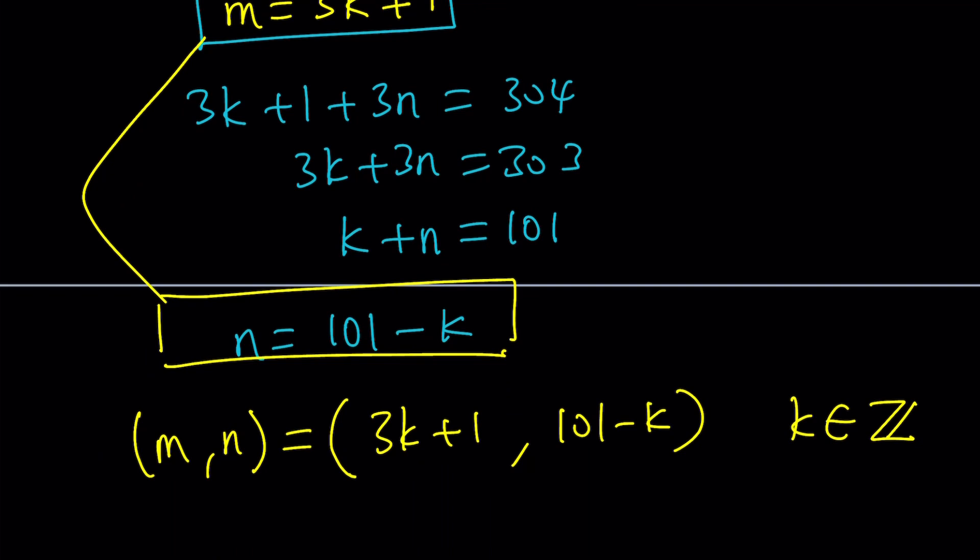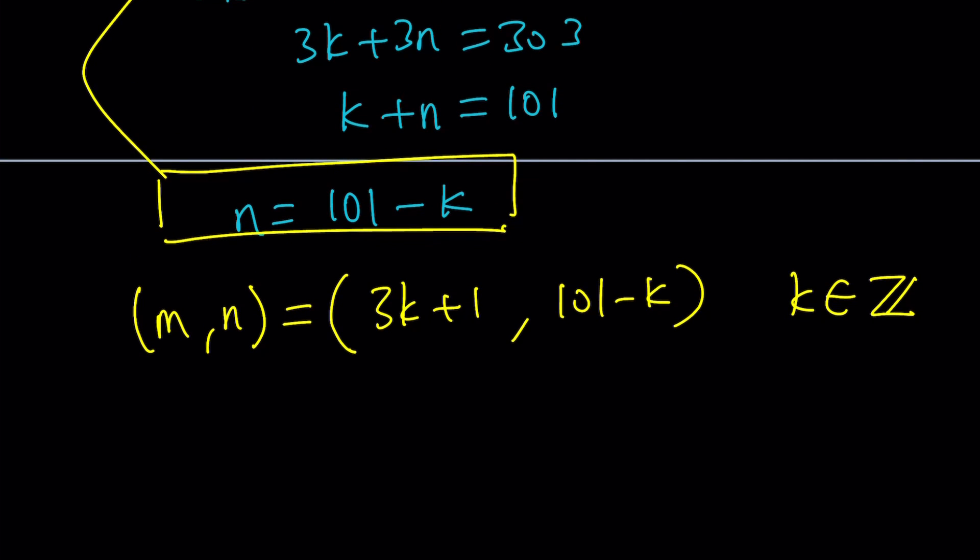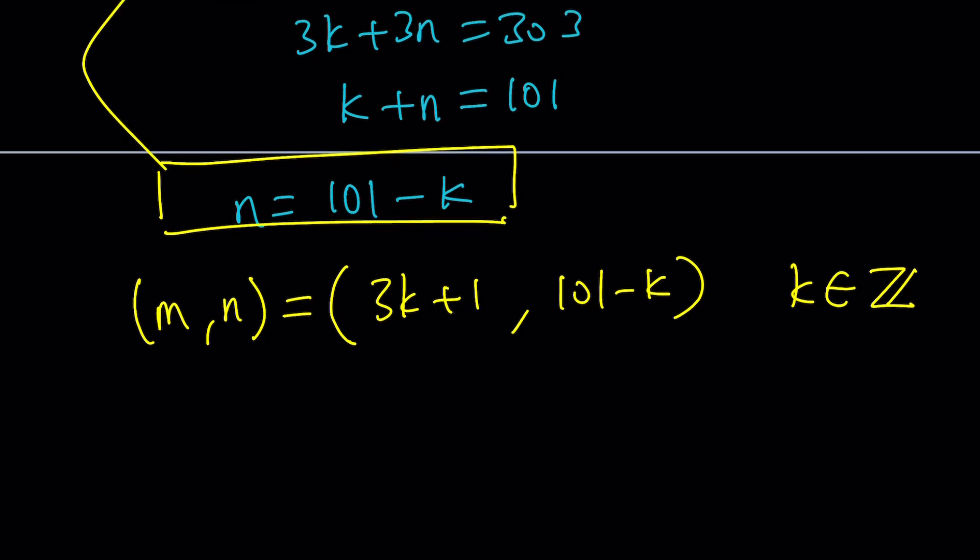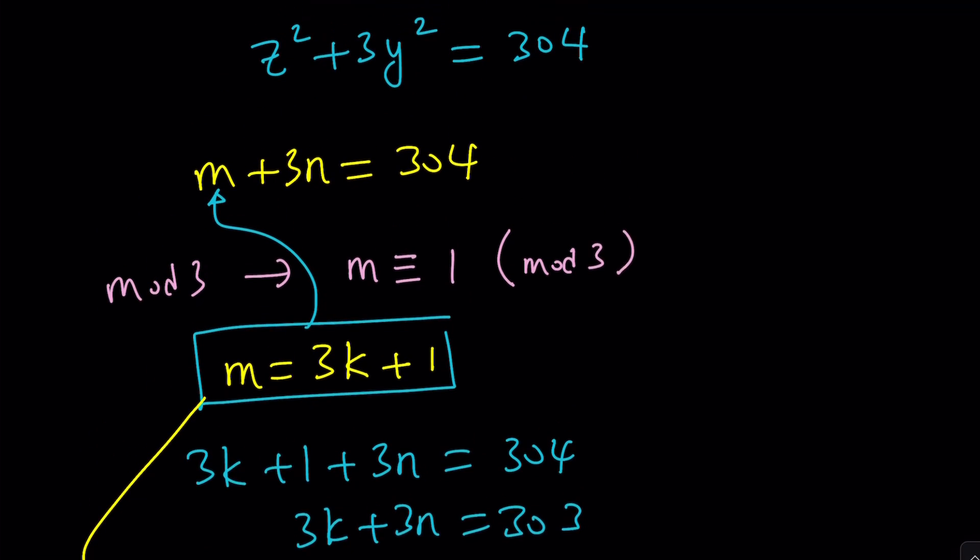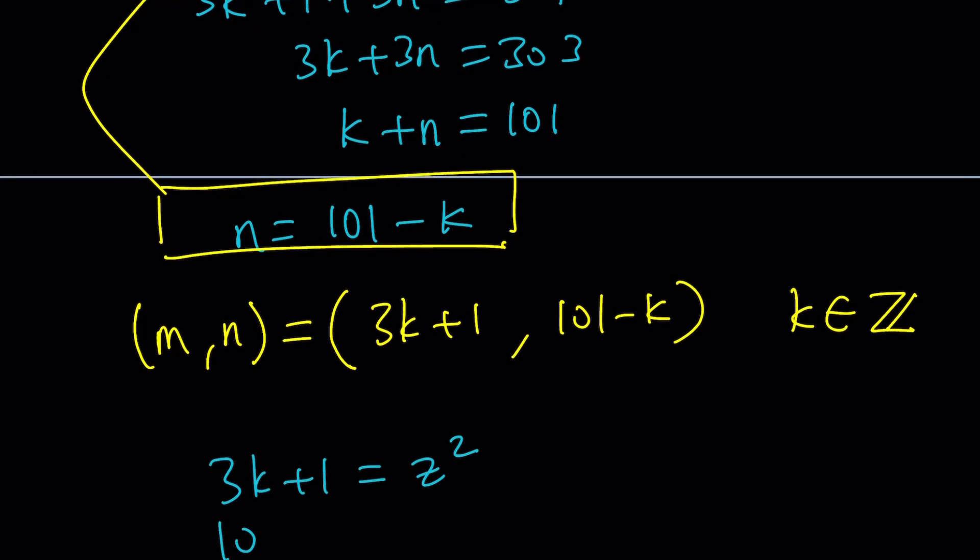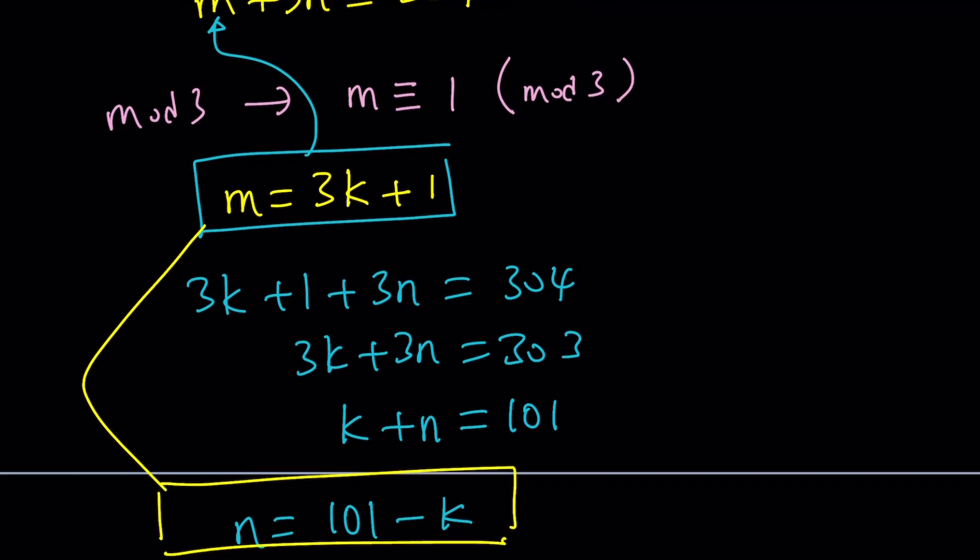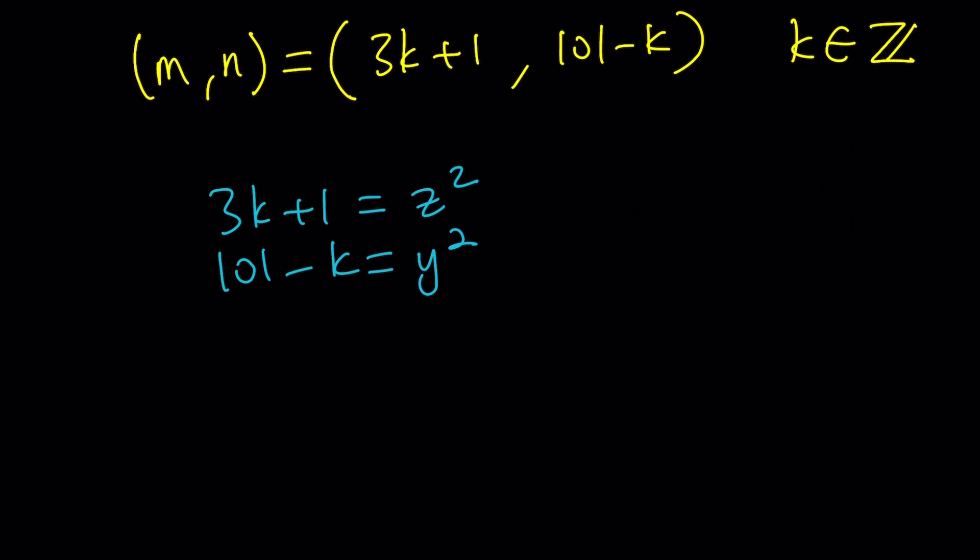Cool. So, we kind of got the parametric solution. So, k is the parameter here. And by changing the values of k, you can find many values, many solutions for m and n. But another stipulation or condition that we need to have is that m and n are perfect squares. So, here's the thing. We do need that 3k plus 1 is a perfect square. And in this case, m actually represents z squared, right? So, this would be z squared. And 101 minus k, it needs to be y squared.